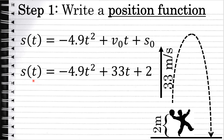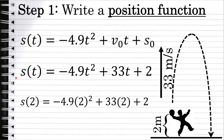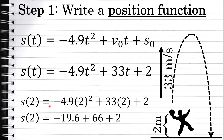The position function provides a way to tell how high the ball is at any point in time. For example, if we wanted to know how high the ball is 2 seconds after it leaves the thrower's hand, we would simply evaluate s of 2. We would substitute 2 for the value of t in this function, which would result in negative 19.6 plus 66 plus 2, or 48.4 meters. After 2 seconds, this ball would be 48.4 meters above the ground.